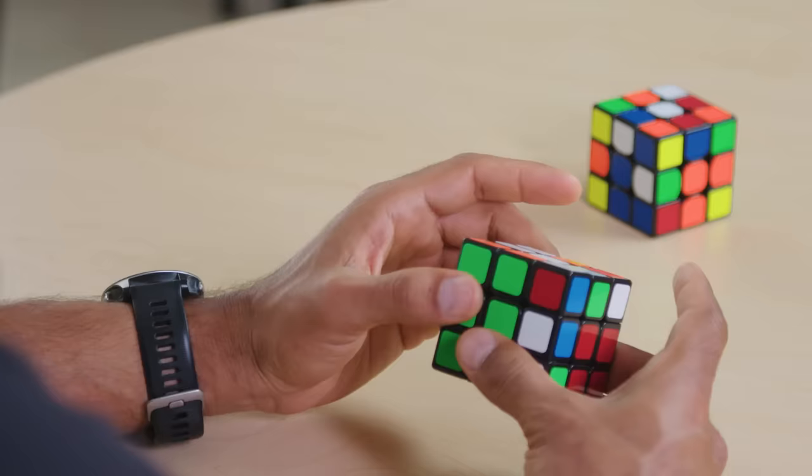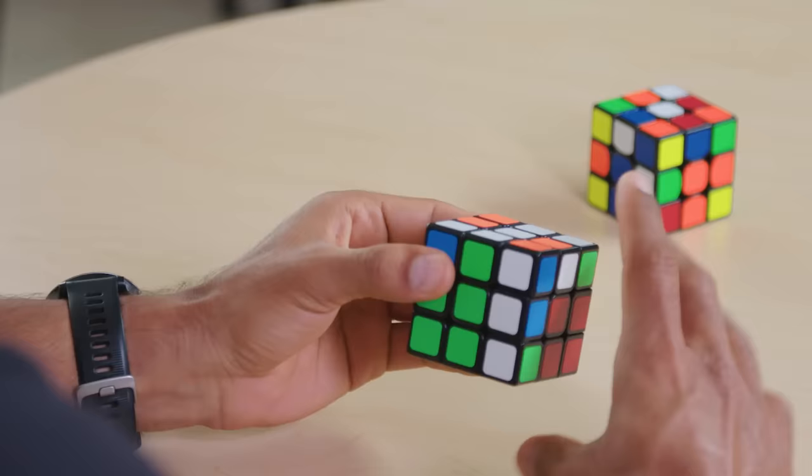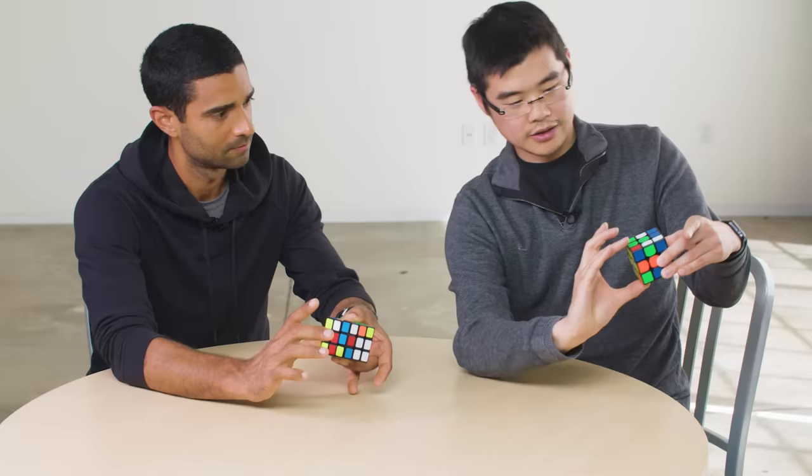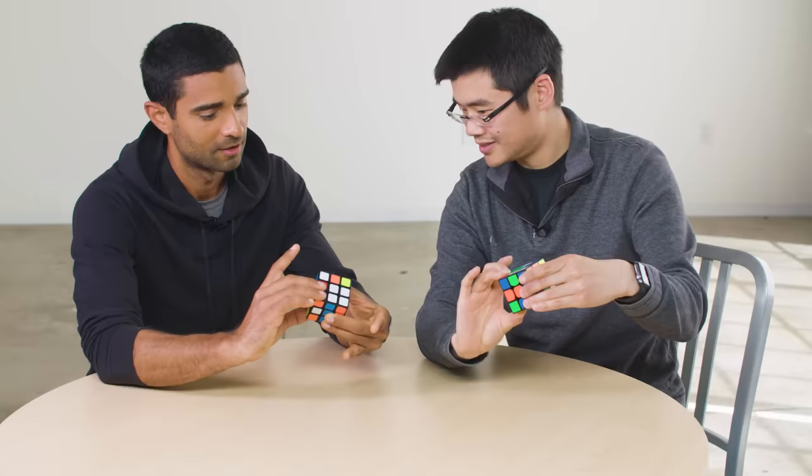Now as a rule of thumb, the more algorithms you know, the fewer moves you'll need to solve the cube. A beginner who has committed fewer than 10 algorithms to memory might solve a cube in, say, 120 moves, while an expert who has memorized hundreds of algorithms can solve the cube in closer to 50 or 60 moves.